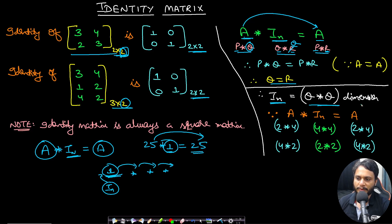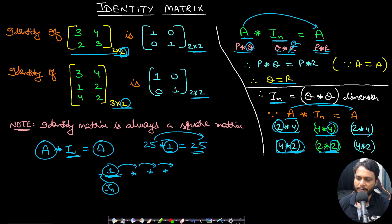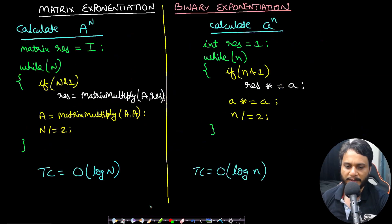The identity matrix has dimension Q by Q, where Q is the number of columns of matrix A. For example, if A's dimension is 2 by 4, the identity matrix will be 4 by 4 so that multiplying gives 2 by 4 again. If A is 4 by 2, then the identity matrix is 2 by 2, and the result of multiplication will be 4 by 2, which is the same as the initial matrix.